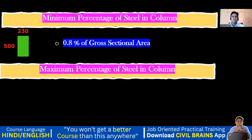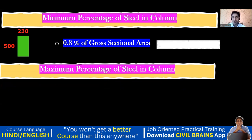Now what is the maximum percentage of steel in the column? This is a good interview question — even at the junior structural engineer level, you can expect this. To find the minimum steel area, calculate 0.8 divided by 100, then multiply by the gross sectional area of 230 by 500.